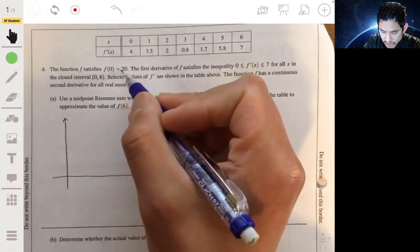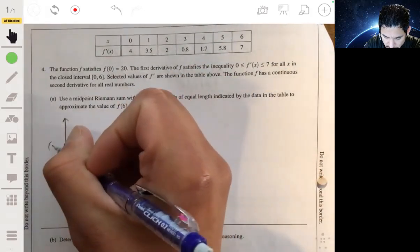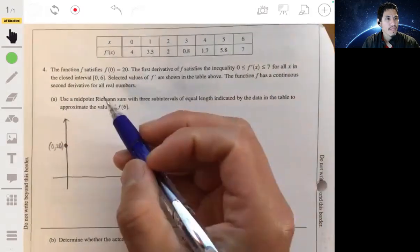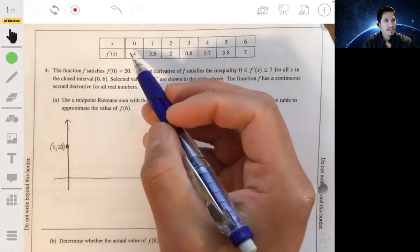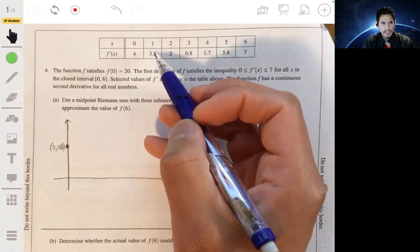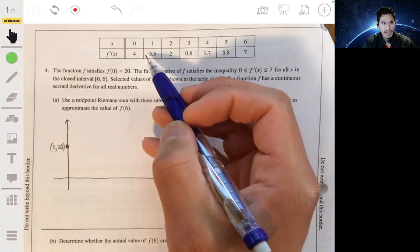We're told f of 0 is 20. So we start at 0, 20. And remember, this table gives you values that describe the rate of change, not the value of f.